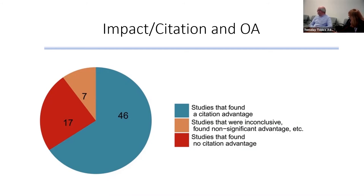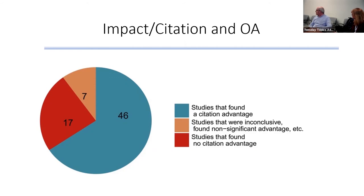Do you think part of the studies that found no citation advantage is the bias against open access journals — that people had this bias and maybe that's what they saw in the study? It could also be a difference in field. STEM fields picked up open access much earlier than humanities fields. Humanities tend to put primary attention more on monographs — long form book publishing — and they're more likely to publish with small society publishers that are relatively low cost, versus high-energy physics journals that cost five figures.